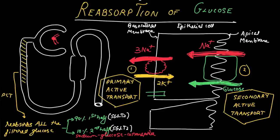On the basolateral side, there is a glucose transporter that allows glucose to exit from the cell via facilitated diffusion. This is how glucose is fully reabsorbed — by secondary active transport on the apical side and facilitated diffusion on the basolateral side.